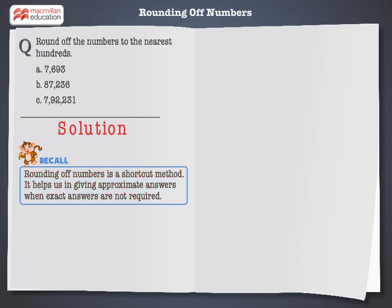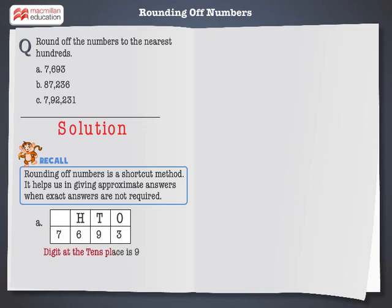Let us start with the first number. In 7,693, the digit at the tens place is 9. And we know 9 is greater than 5. So, it will be rounded off to the nearest higher hundreds, that is, 7,700.